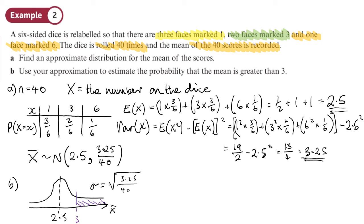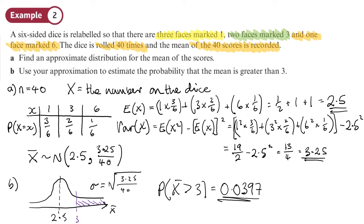On the calculator, menu 7 normal CD: lower value of 3, upper value of any large number, standard deviation is the square root of 3.25 divided by 40. The probability that the mean is greater than 3 is equal to 0.0397 to 4 decimal places.